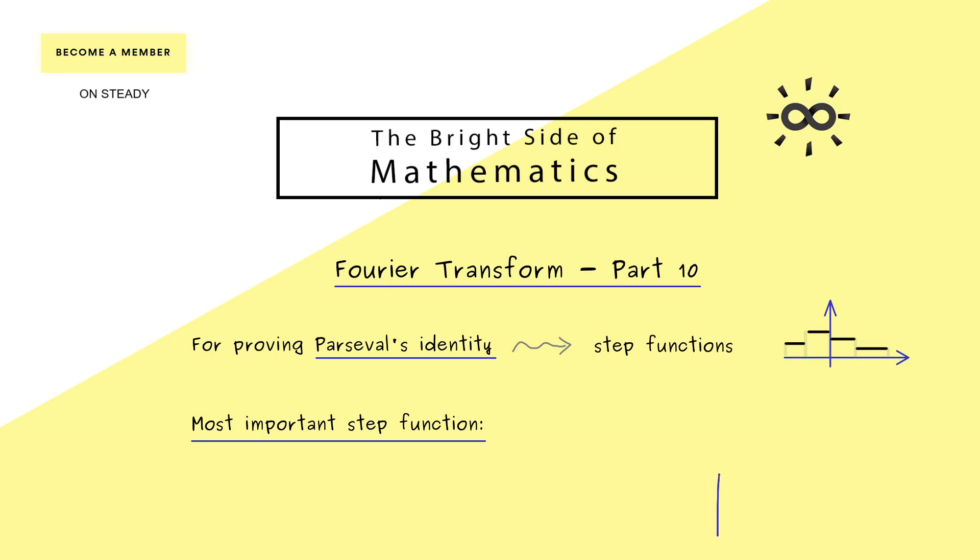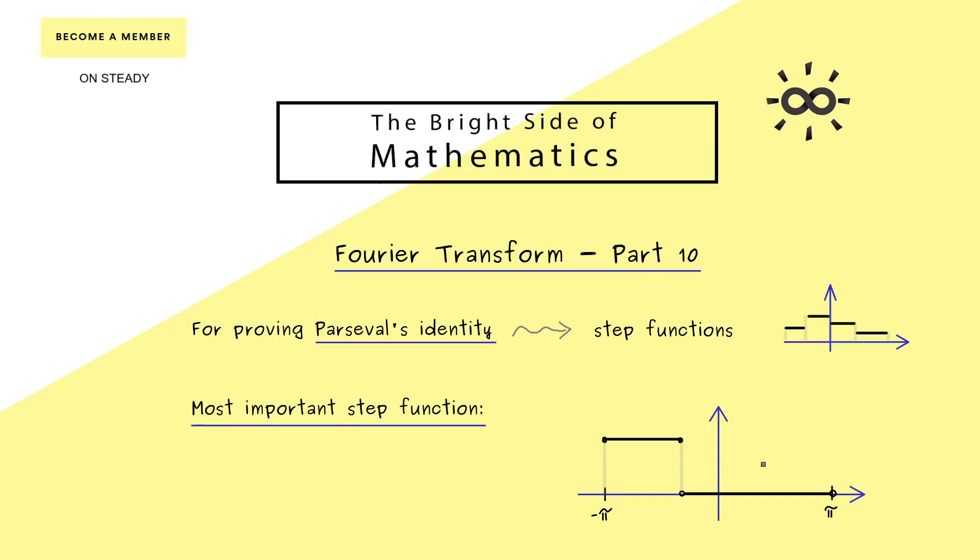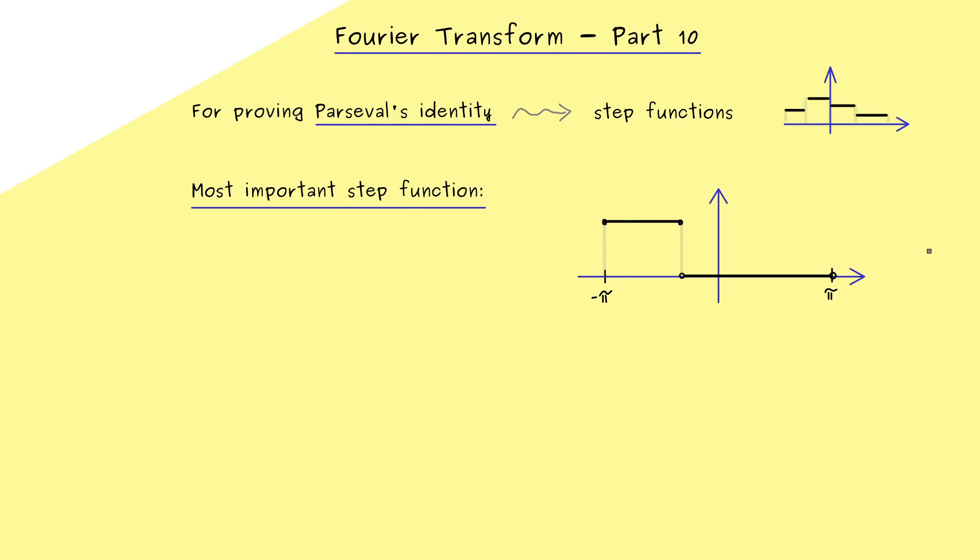And as always it's sufficient to sketch the function on the interval minus π to π. Hence let's say here we have minus π and here plus π. And now you might already guess, we want that the function is at the value 1 and at the value 0. And moreover we can say that at the boundary points it should be at 1 as well. So there you see, with that we have a well defined function and now we can calculate the Fourier series of this one.